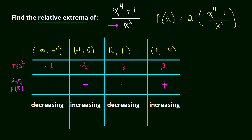Our critical numbers were negative 1 and 1. 0 was a vertical asymptote, so vertical asymptote, I'm just going to write VA.